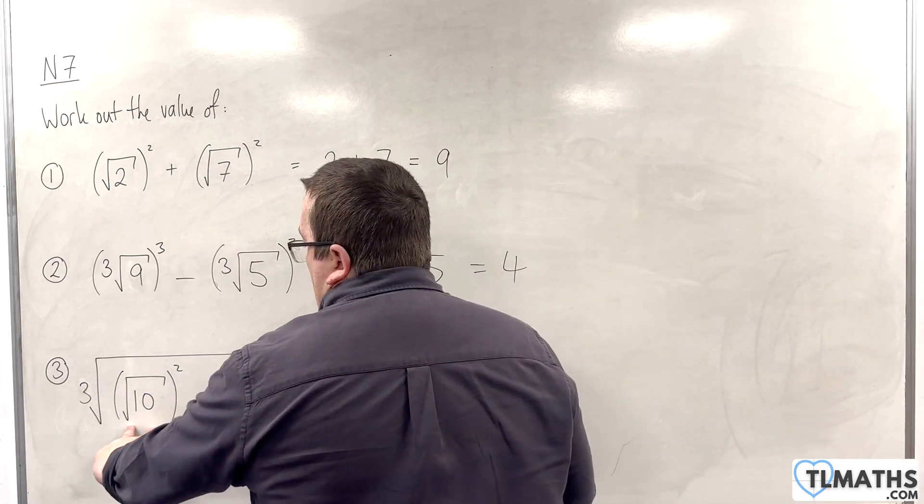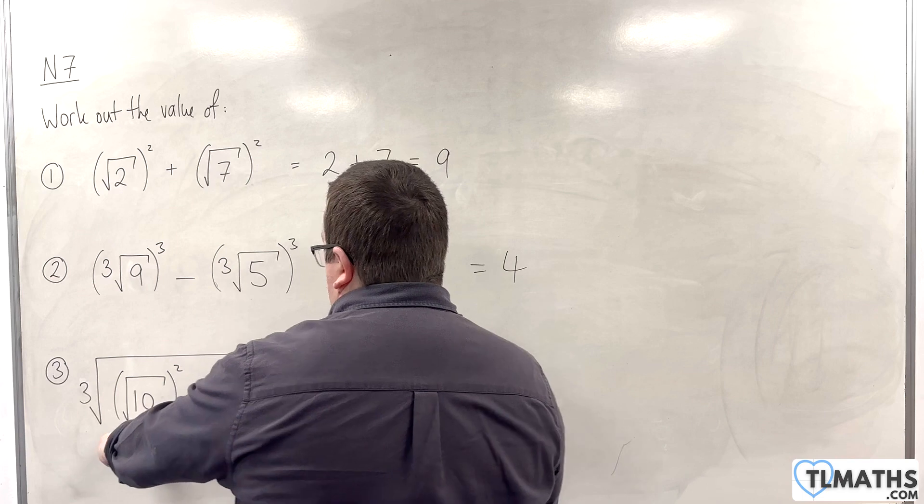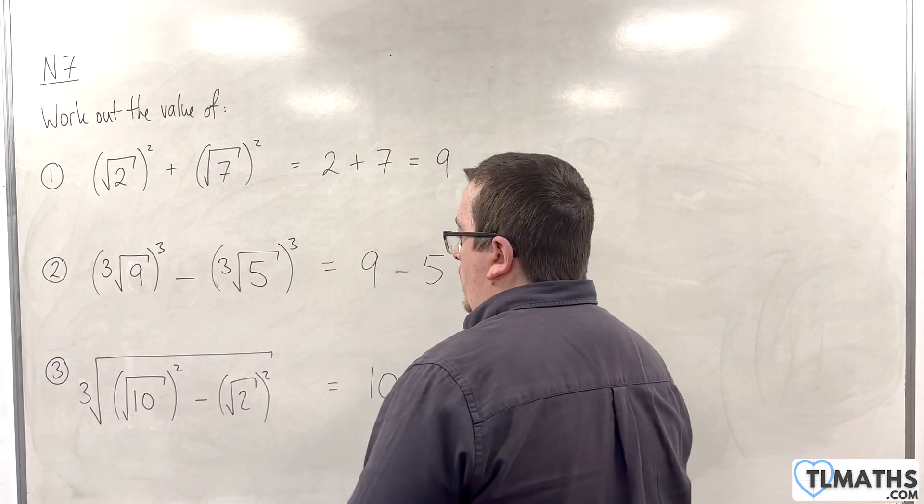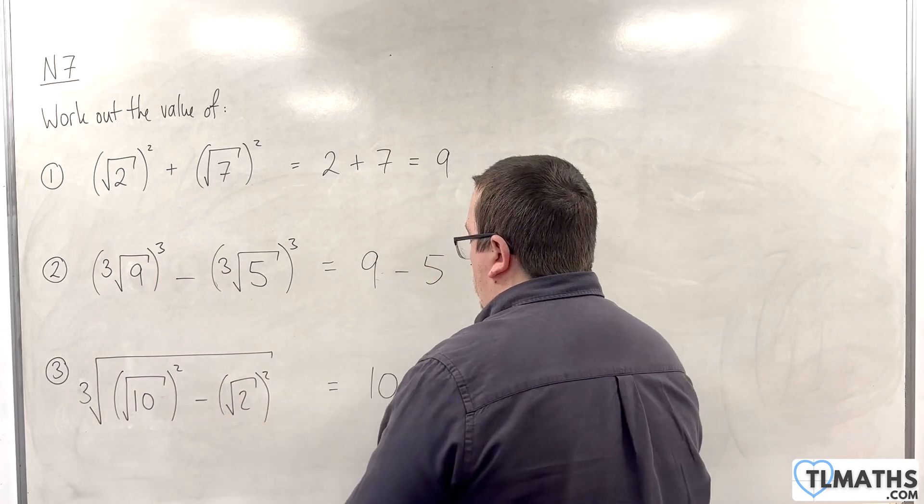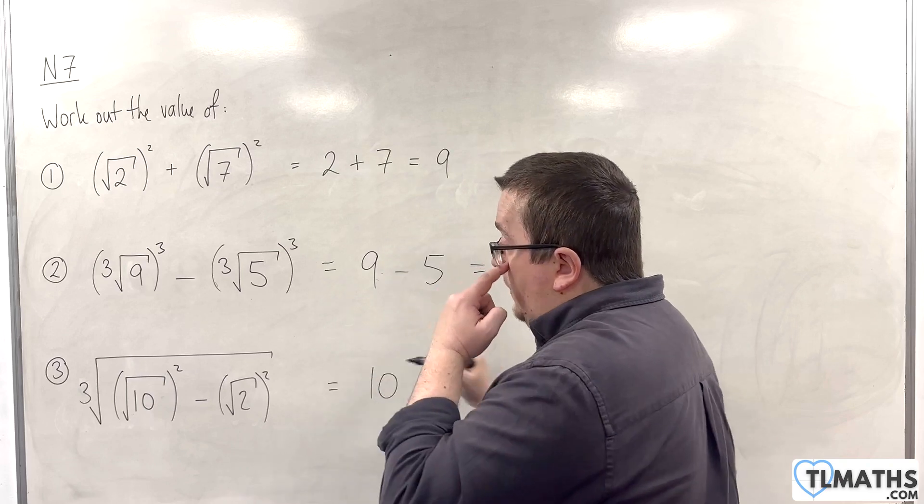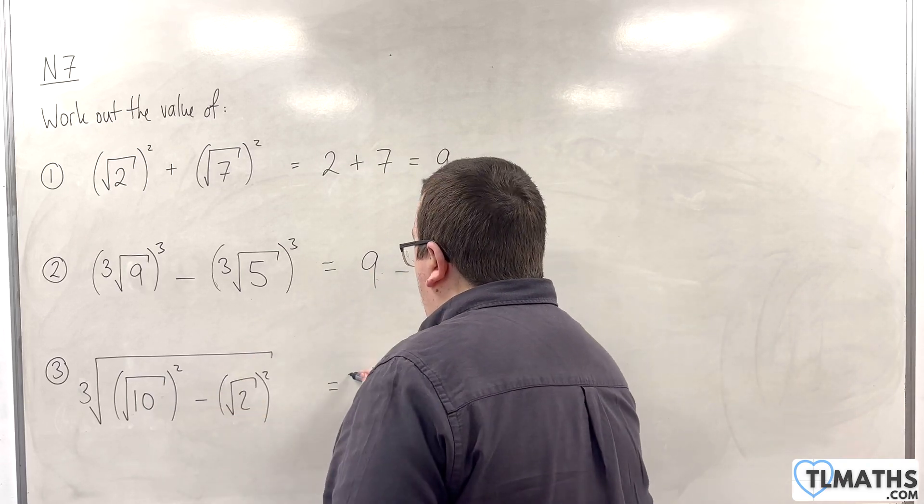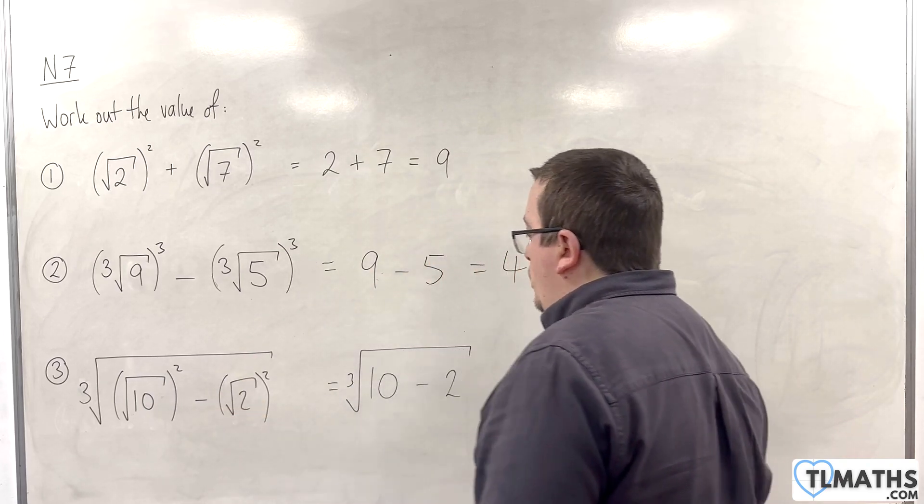So, we have the square root of 10 all squared, which is 10. We have the square root of 2 all squared, which is 2. So, we have 10 take away 2 underneath the cube root.